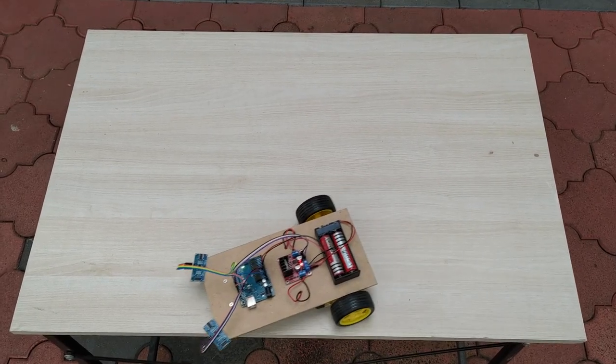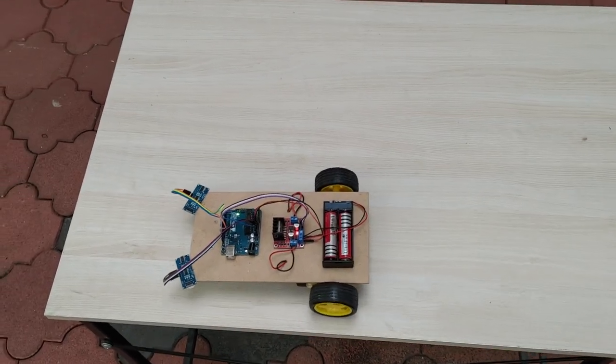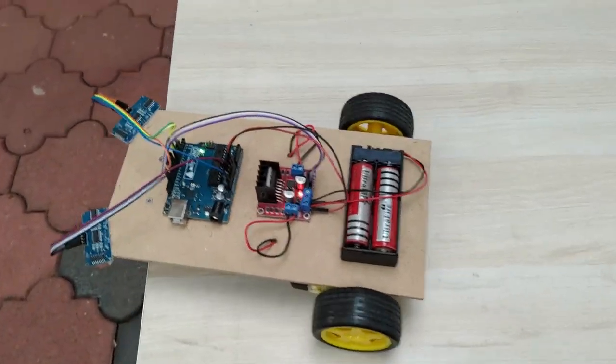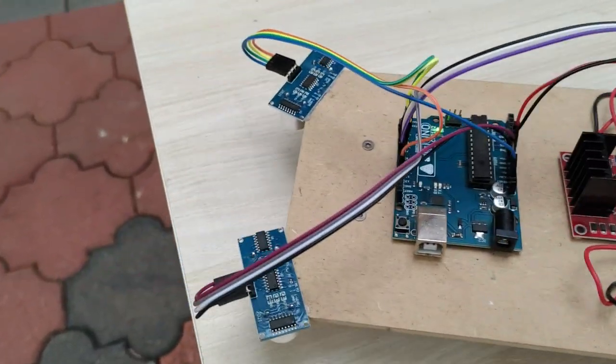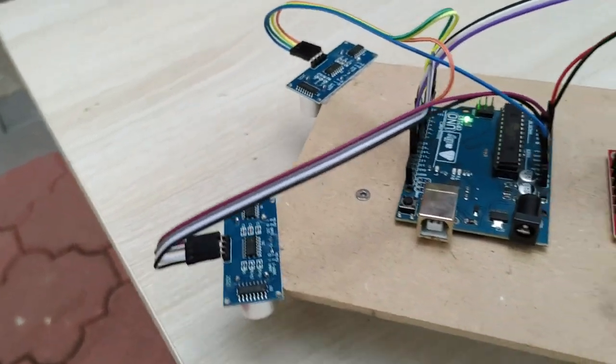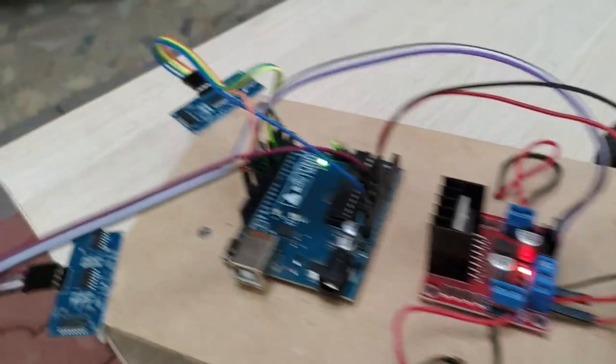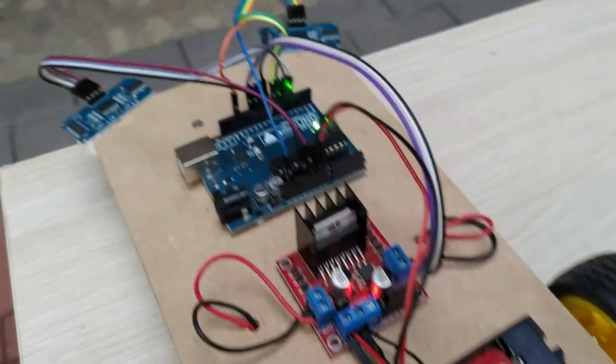When at least one sensor is outside the table, the robot takes a reverse and changes direction. The response time of the Arduino and ultrasonic sensor is very fast and edge detection is done very quickly by the ultrasonic sensor.